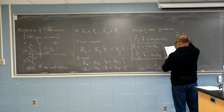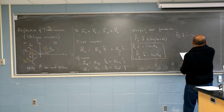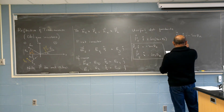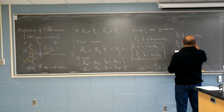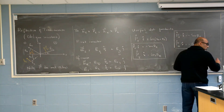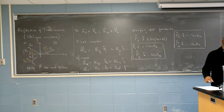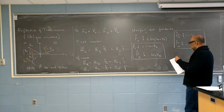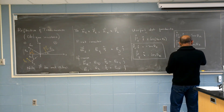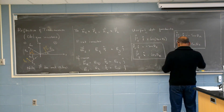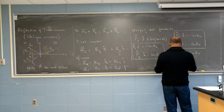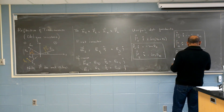PR dot Z hat equals minus sine theta r. PR dot X hat — because I'm worried about Z and X — is minus cosine theta r. These are not fundamentally very important, but we'll be using these results on a regular basis. And finally, P transmitted dot Z hat equals minus sine theta t, and P T dot X hat is cosine theta t.